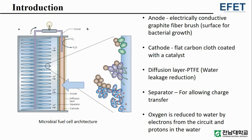A flat carbon cloth coated with a catalyst is used as a cathode. For water leakage reduction, a diffusion layer is used. A separator is used for allowing charge transfer. Oxygen is reduced to water by electrons from the circuit and protons in the water.